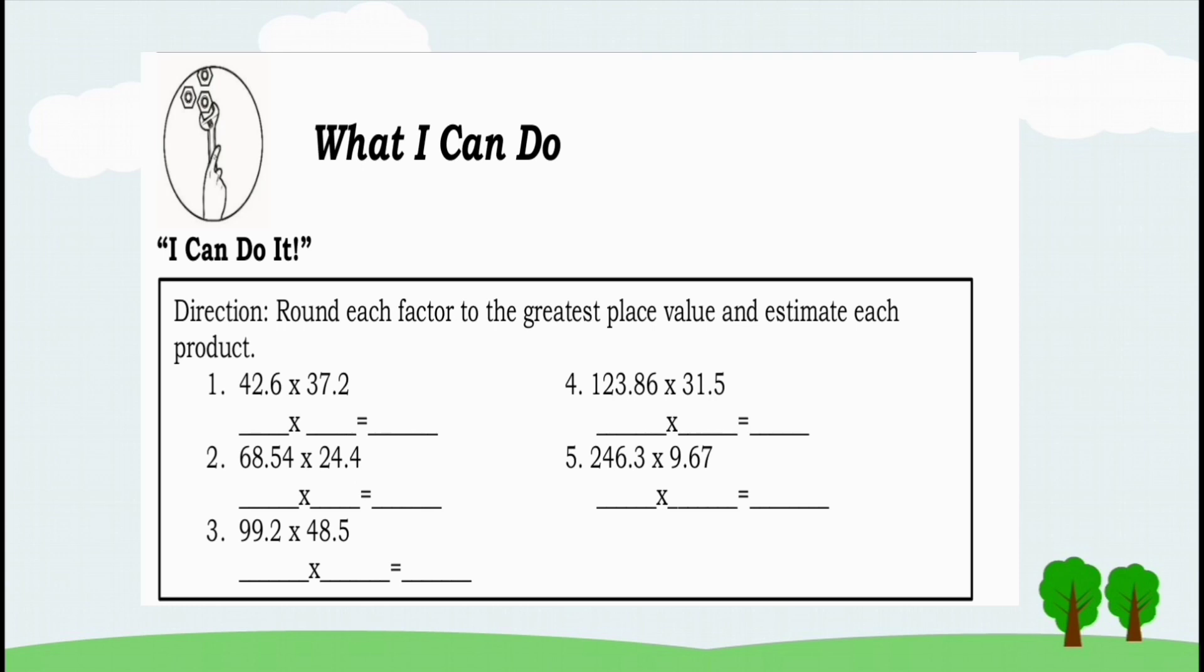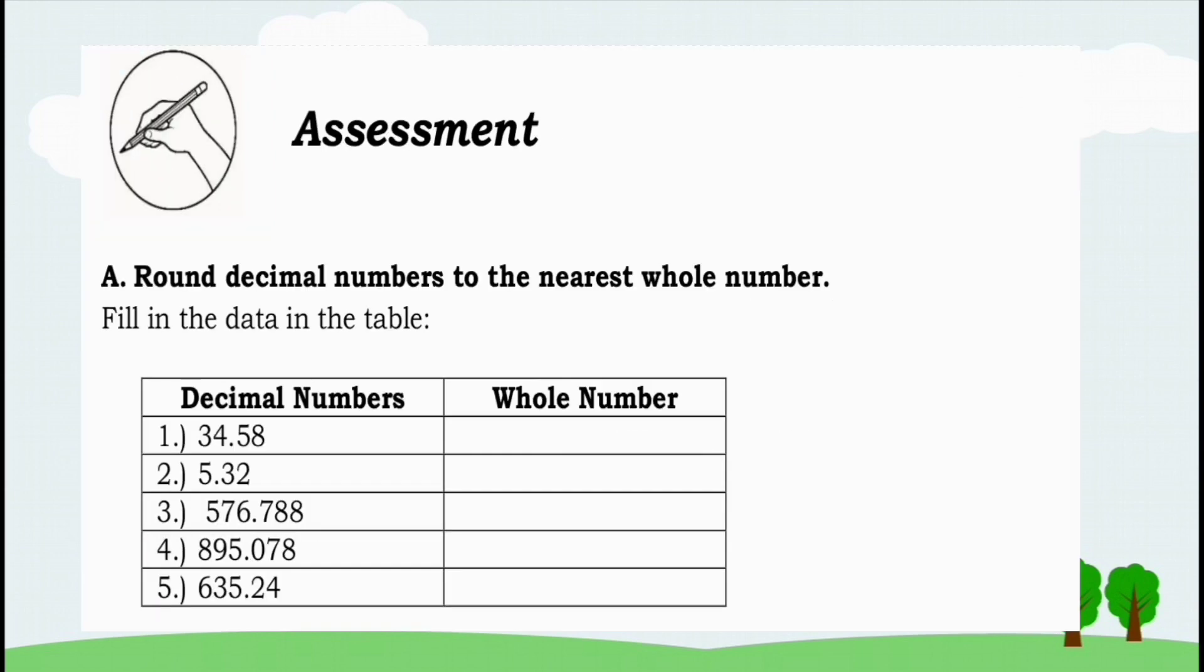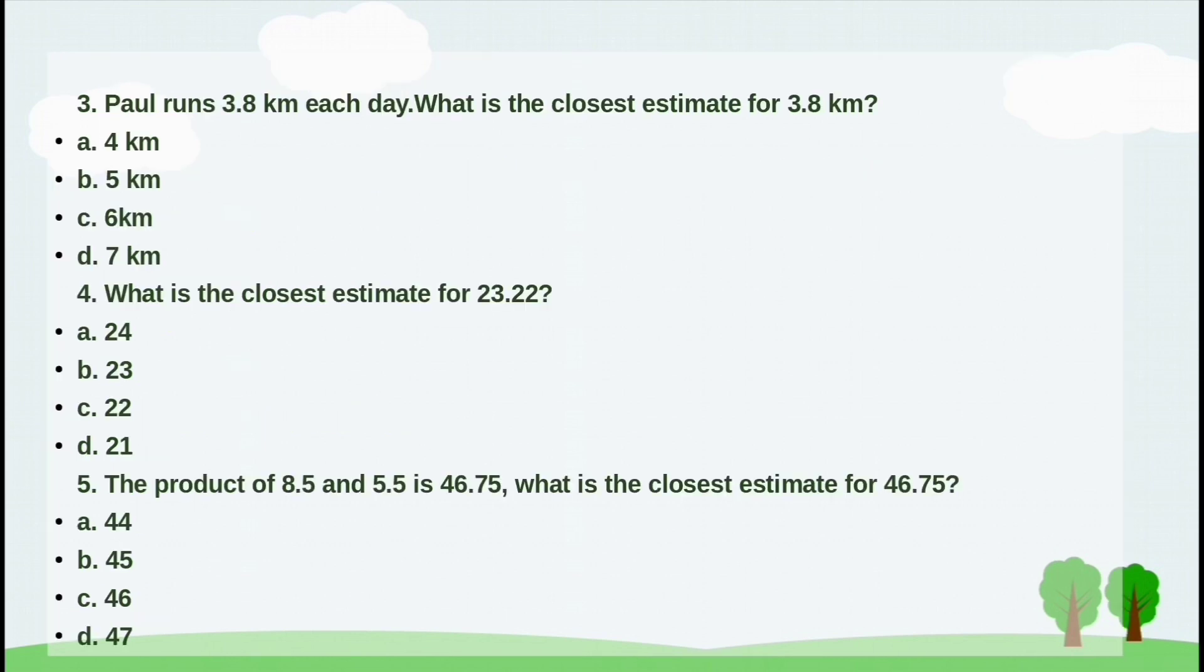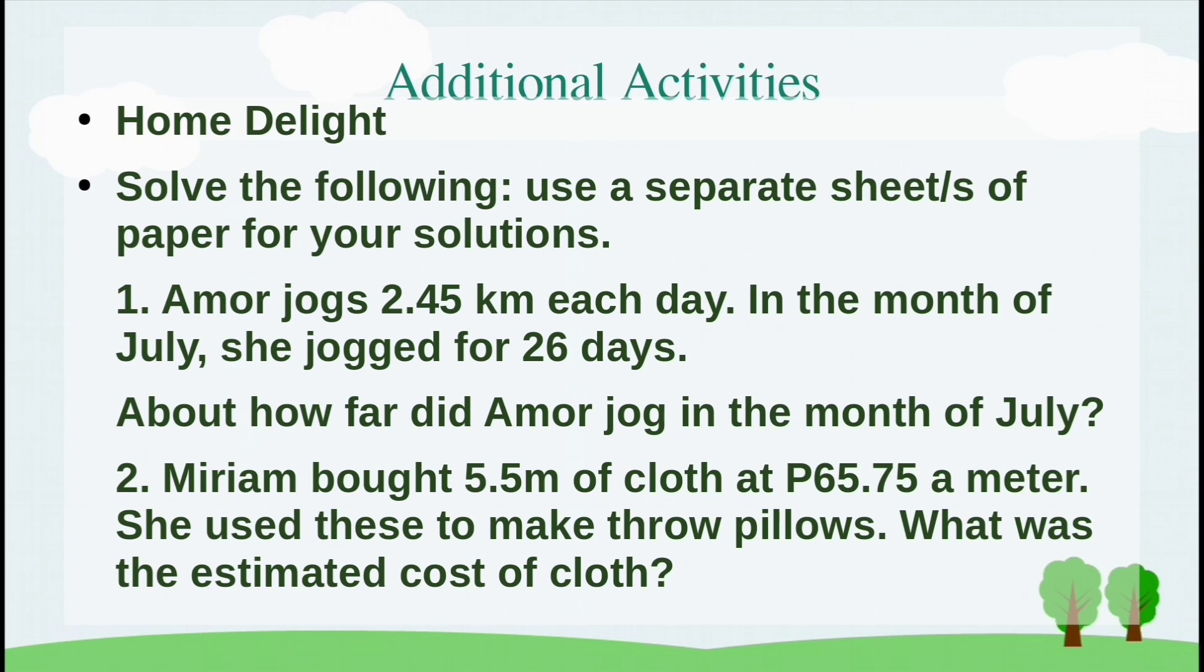What I can do: Round each factor to the greatest place value and estimate each product. Assessment: Round decimal numbers to the nearest whole numbers. Read carefully and understand, write the letter of the correct answer. Additional activities: Solve the following.